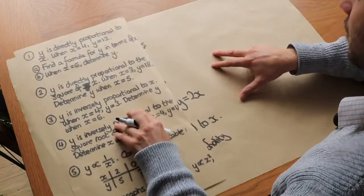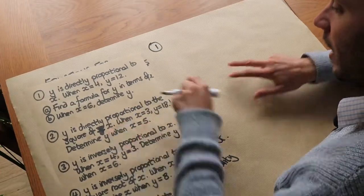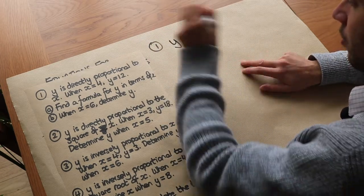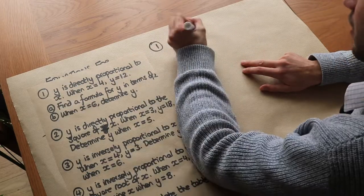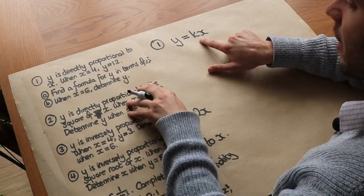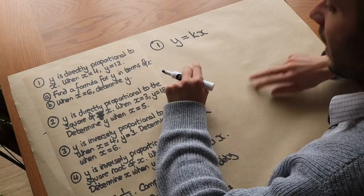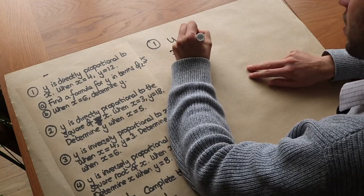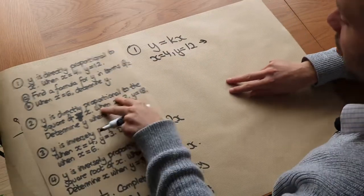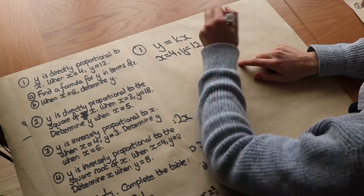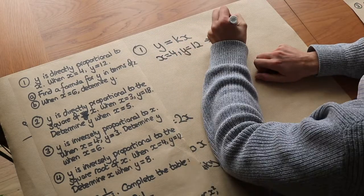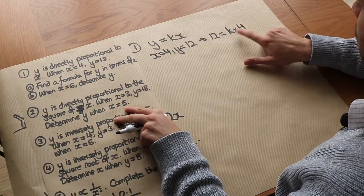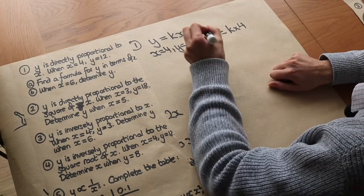Let's use that to answer these questions. We've got y is directly proportional to x, so we can write y equals kx. We don't know what k is yet, but we can use the provided values to work it out. It tells us when x is 4, y is 12. Substituting into the equation: 12 equals k times 4. Clearly k is going to be 3, since 3 times 4 is 12. So k equals 3.